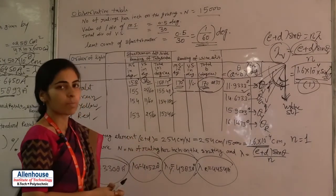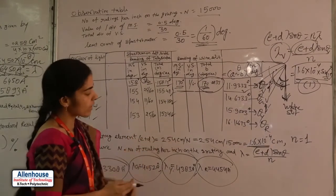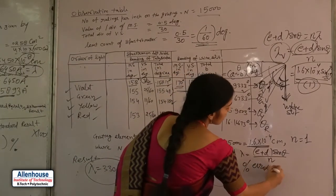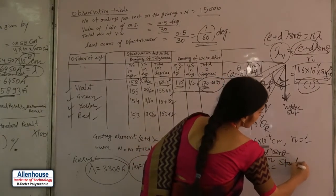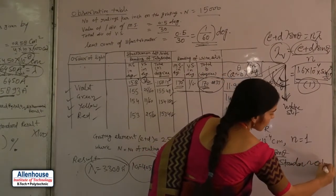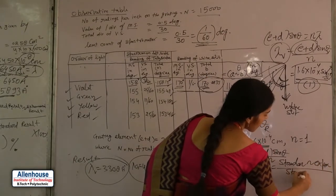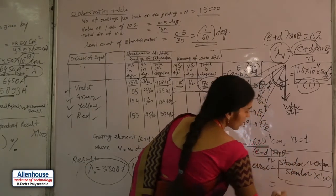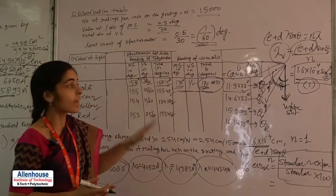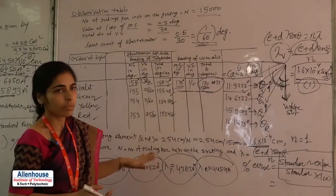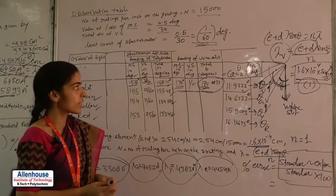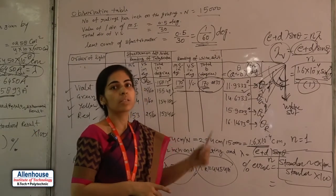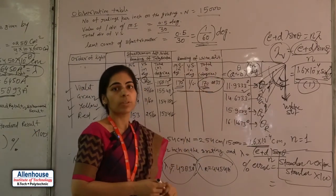You can also calculate the percentage error using the formula: percentage error = |standard value − experimental value| / standard value × 100. For different colors, this lets you check how accurate your experiment was. So, using the diffraction grating method, we can easily calculate the wavelengths of different colors. Thank you.